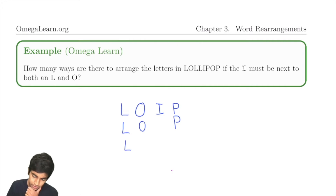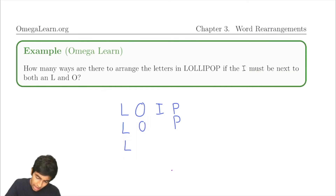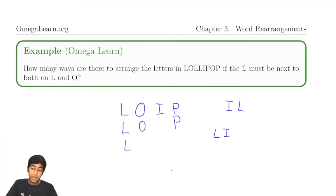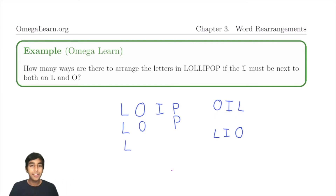Let's figure out what to make of this condition: the I must be next to an L and an O. For I and L to be next to each other, it has to be IL or LI. But then the O must also be next to the I. So either O is on the left and L on the right, or L is on the left and O on the right. There are just two cases.